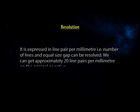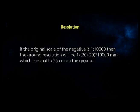Resolution is expressed in line pairs per millimeter — the number of lines and equal-size gaps that can be resolved. We can get approximately 20 line pairs per millimeter on the original negative. If the original scale of the negative is 1:10,000, then the ground resolution will be 1 / (20 × 20) × 10,000 mm, which equals 25 centimeters on the ground.